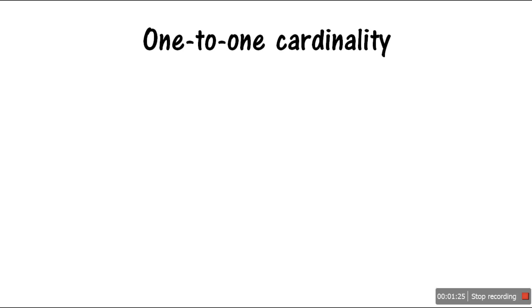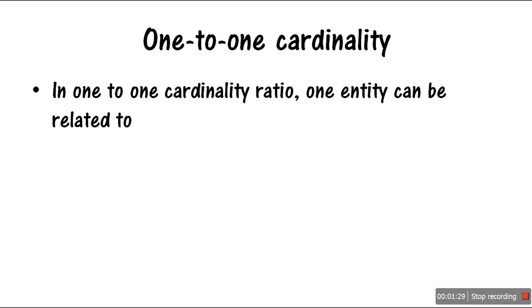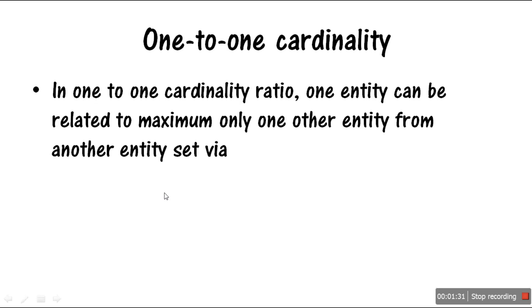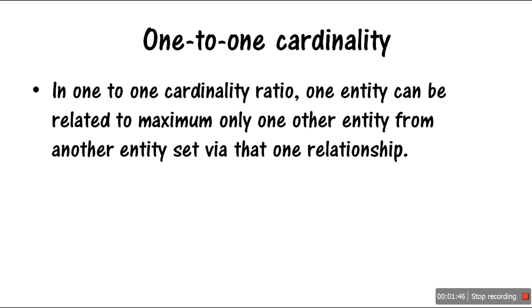The first type is called one-to-one cardinality ratio. In one-to-one cardinality ratio, one entity can be related to maximum only one other entity from another entity set via that one relationship. What do we mean by 'maximum only one other entity'? Let's look at an example.